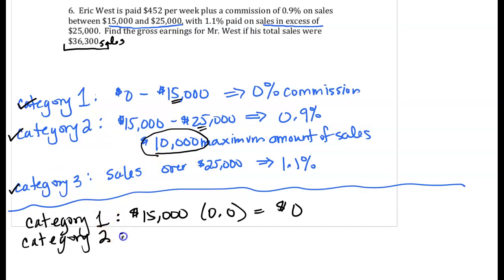So in Category 2, we're going to use all of the $10,000 available in that category. So $10,000 in sales in Category 2 is paid at 9% commission. So 0.9% is going to be 0.9 divided by 100, which is 0.009. And that gives us $90.